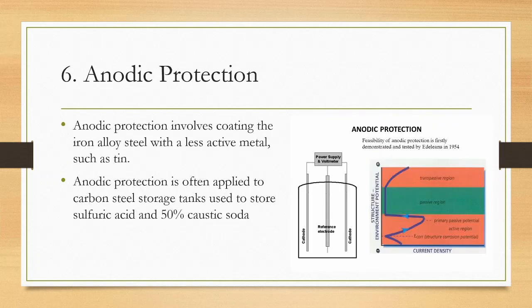Anodic protection: Anodic protection involves coating the iron alloy steel with a less active metal such as tin. Tin will not corrode, so the steel will be protected as long as the tin coating is in place. This method is known as anodic protection because it makes the steel the anode of an electrochemical cell. Anodic protection is often applied to carbon steel storage tanks used to store sulfuric acid and 50% caustic soda. In these environments, cathodic protection is not suitable due to extremely high current requirements.